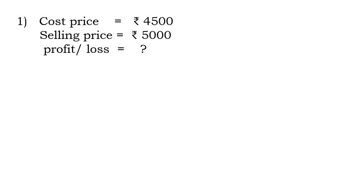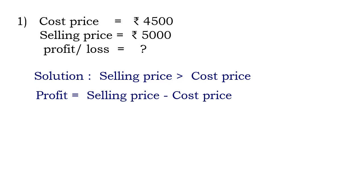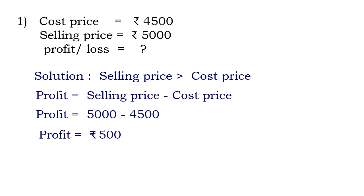The first example: cost price is rupees 4500 and selling price is rupees 5000. Whether you are getting profit or loss, you have to find that. As you can see, the selling price is greater than cost price, so you are getting profit. We are going to apply the profit formula: Profit = Selling Price − Cost Price. Substituting: 5000 − 4500 = 500. The answer is rupees 500. Just check whether cost price or selling price is greater.